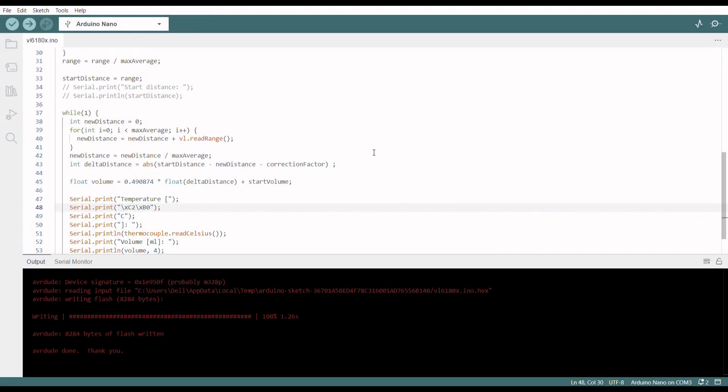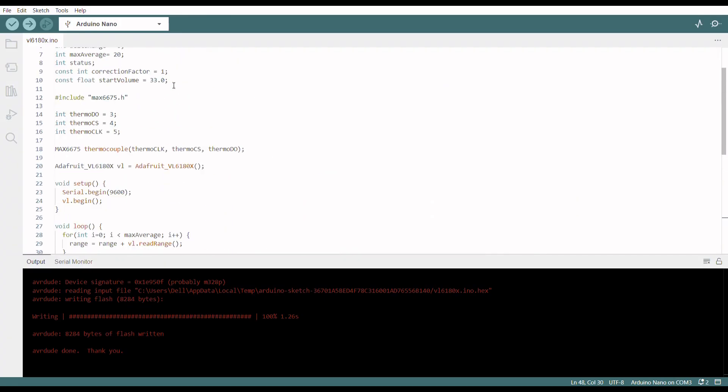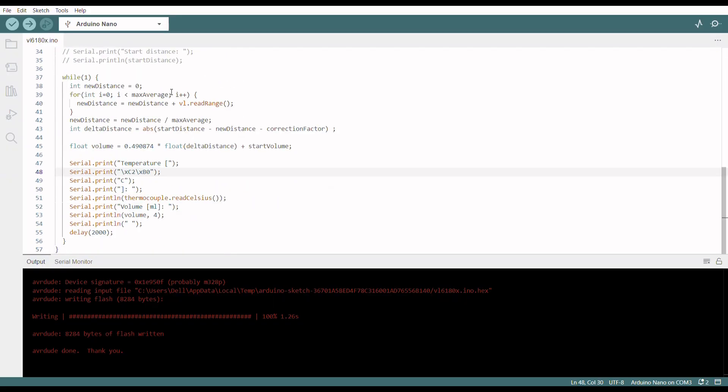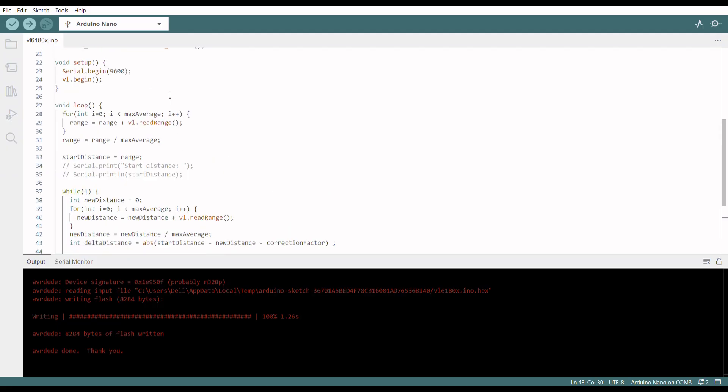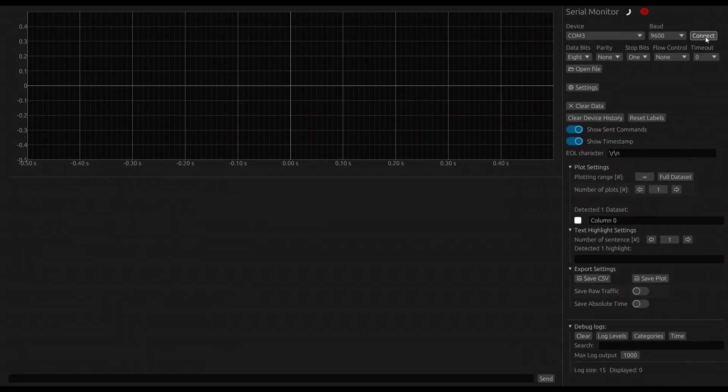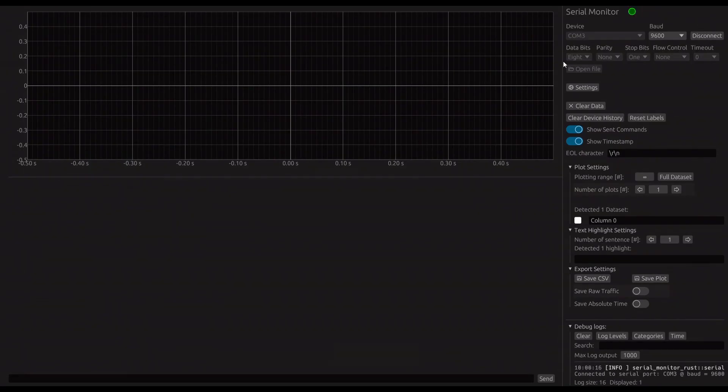I then use those data to write a small program for the microcontroller. It outputs the temperature and volume via the Arduino serial monitor. Since you can't save the data directly in a CSV sheet with the Arduino serial monitor, I looked for an alternative and found what I was looking for. A cross-platform serial monitor and plotter written entirely in Rust by Hacknas. Link in the description.